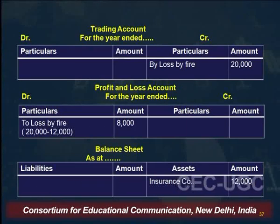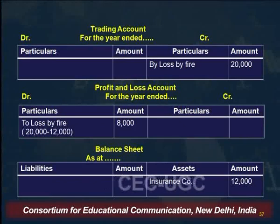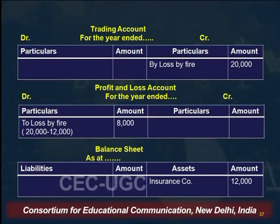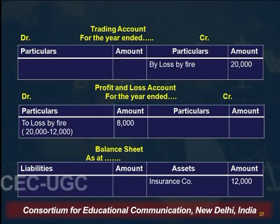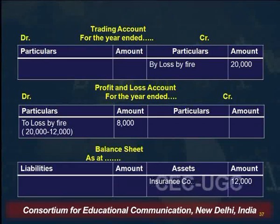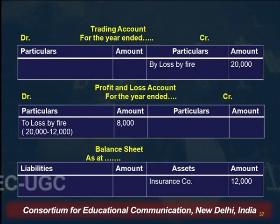Why do we deduct from purchases? Because any goods not used for the purpose of sale are deducted from purchases. So you can deduct from purchases or show on the credit side of the trading account — both are correct. In the profit and loss account, only the amount that is actually a loss is shown. When goods are partially insured — out of Rs. 20,000 only Rs. 12,000 accepted — the remaining Rs. 8,000 is the actual loss, so Rs. 8,000 is shown on the debit side of the profit and loss account. Insurance company accepted Rs. 12,000, became the debtor, and is shown on the asset side of the balance sheet.